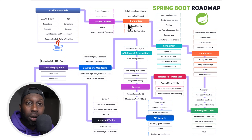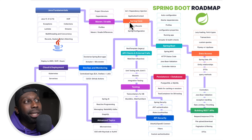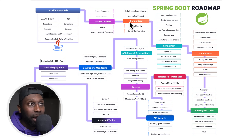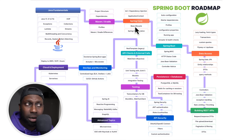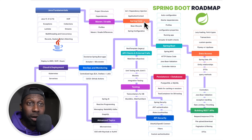Then moving on, you can start to learn about Spring Core. What you mainly need to understand is dependency injection — if you understand dependency injection, you'll be fine. So then learn about the application context, bean lifecycle, and Spring configuration. But basically, dependency injection is the main thing you should be focusing on.